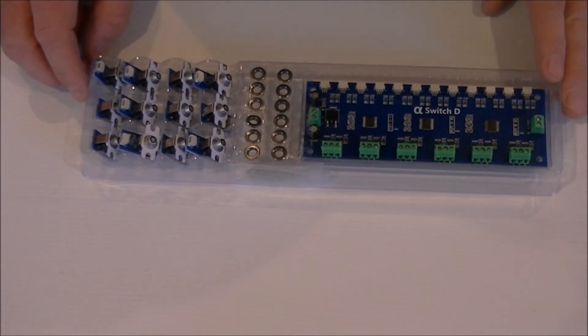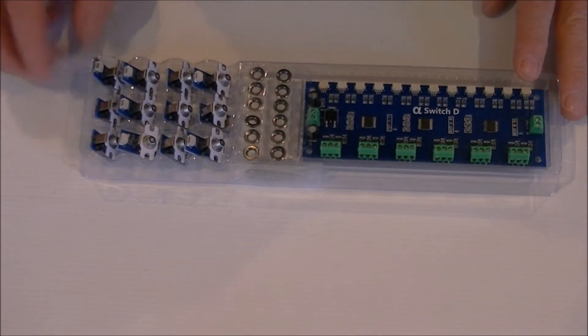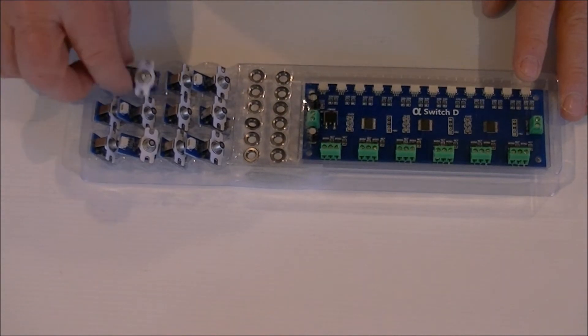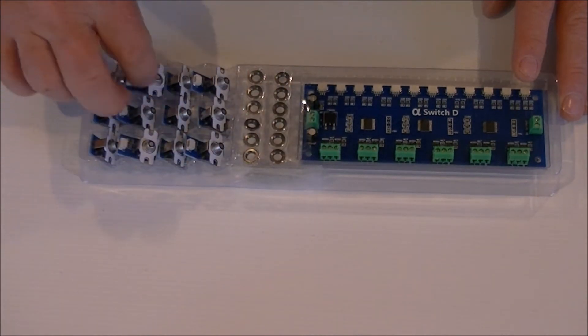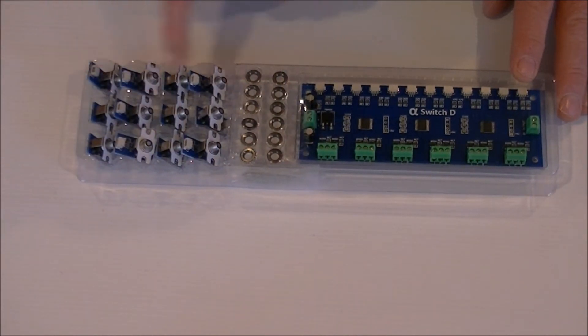So the first component we're going to look at is the cobalt alpha switches. Like I said, they come in a pack of 12. These are the switches here. They come in a pack of 12.